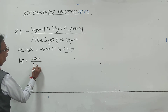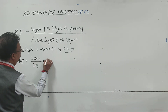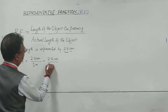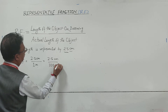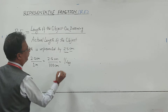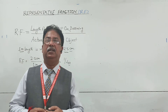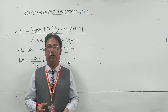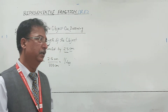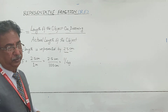Now you can convert this meter into centimeter. So that will be 2.5 centimeter divided by 100 centimeter, which gives 1 upon 40. So the RF 1 by 40 means the actual length of the object will be 40 and we are representing that by 1. In this way we have found out the RF.